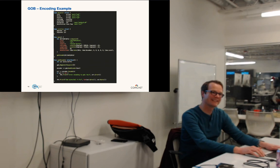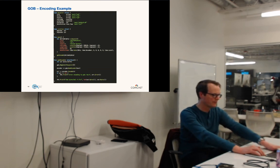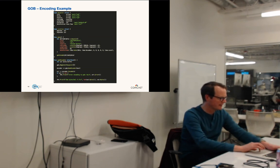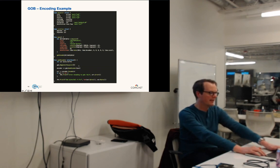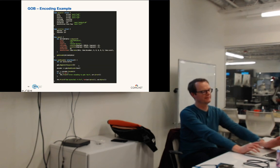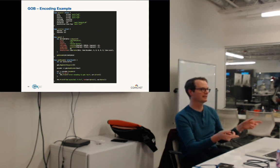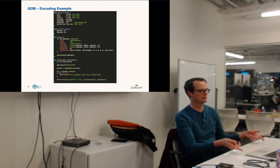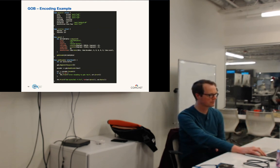GOB uses reflection heavily, which has capability to describe itself. You need to register a struct before encoding — gob.Register, passing the type. That tells the encoder to create the wire type. The code is slightly more verbose — you do have to register your type, unlike JSON and XML where you can just blast it through the encoder. The registration is global — it's registered as a type the GOB encoder can now use.